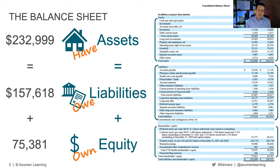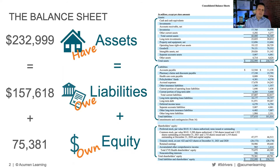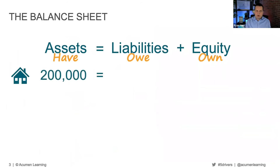When I say 'they,' the common shareholders own about $75 billion of the $233 billion in CVS assets. How do I think about this? We've got our three parts — assets equal liabilities plus equity.